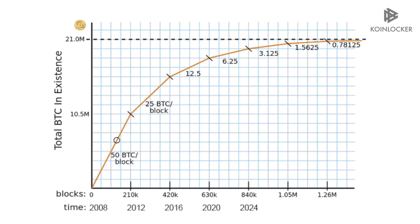When the Bitcoin blockchain was started in 2008, the reward was 50 bitcoins. In 2012 it became 25 bitcoins. In 2016 it became 12.5 bitcoins, and on the 11th of May 2020, another halving took place and the reward is now 6.25 bitcoins.